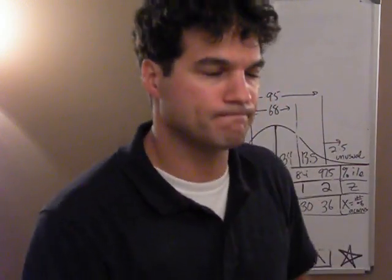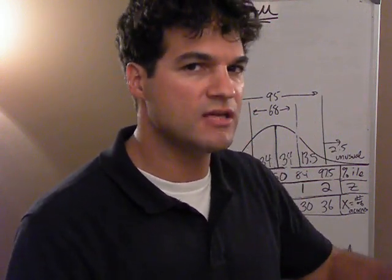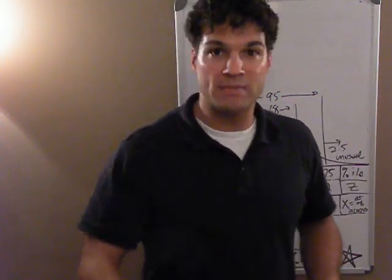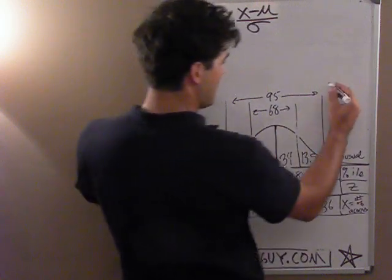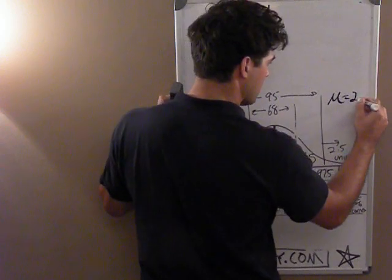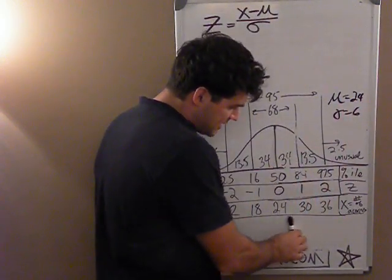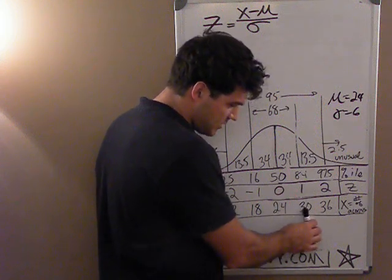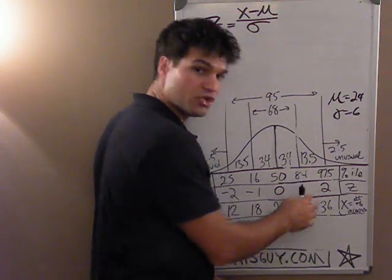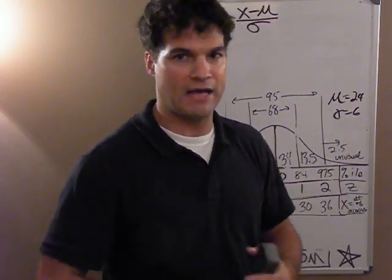That's all it is, which makes sense when you think about it. Because when you divide by standard deviation, it tells you how many standard deviations away you are. The z-score is the number of standard deviations away from the mean. For this chipmunk problem, we still have a mean of 24 and a standard deviation of 6. So if I go one standard deviation above the mean — up 6 — my z-score is 1. If I'm two standard deviations up, my z-score is 2.